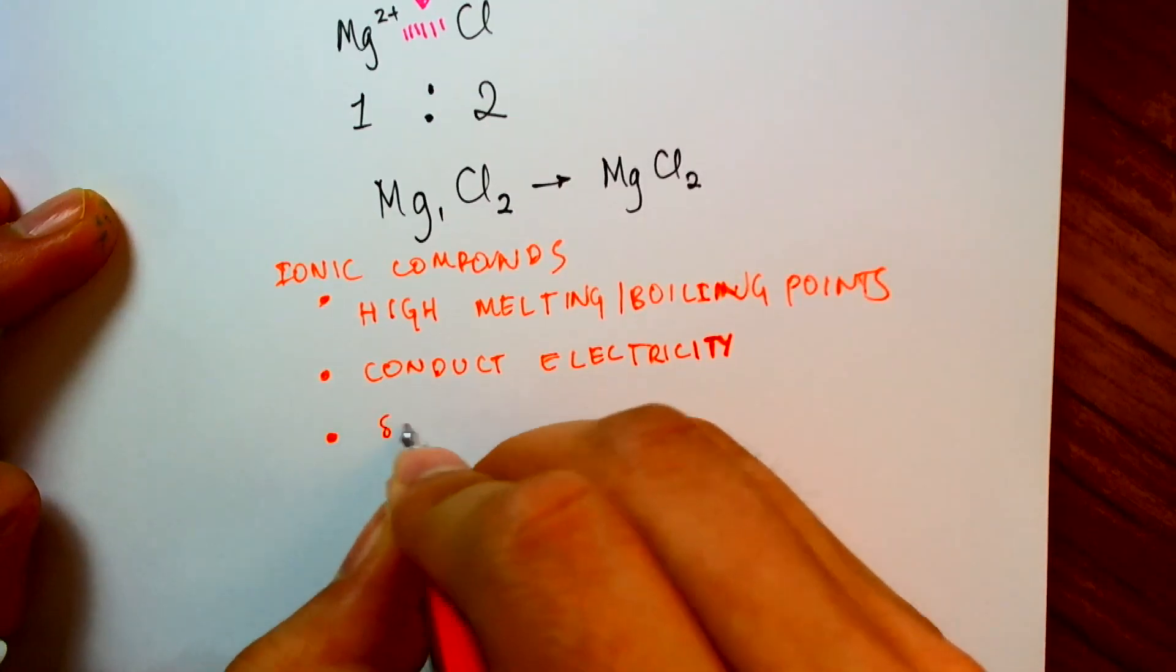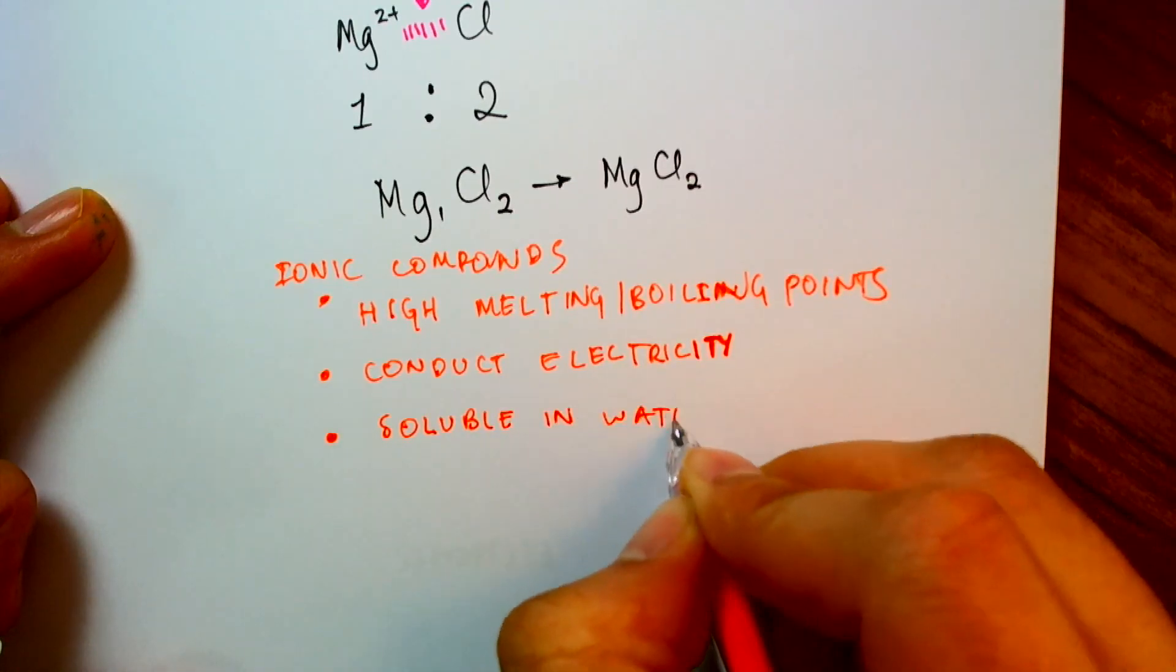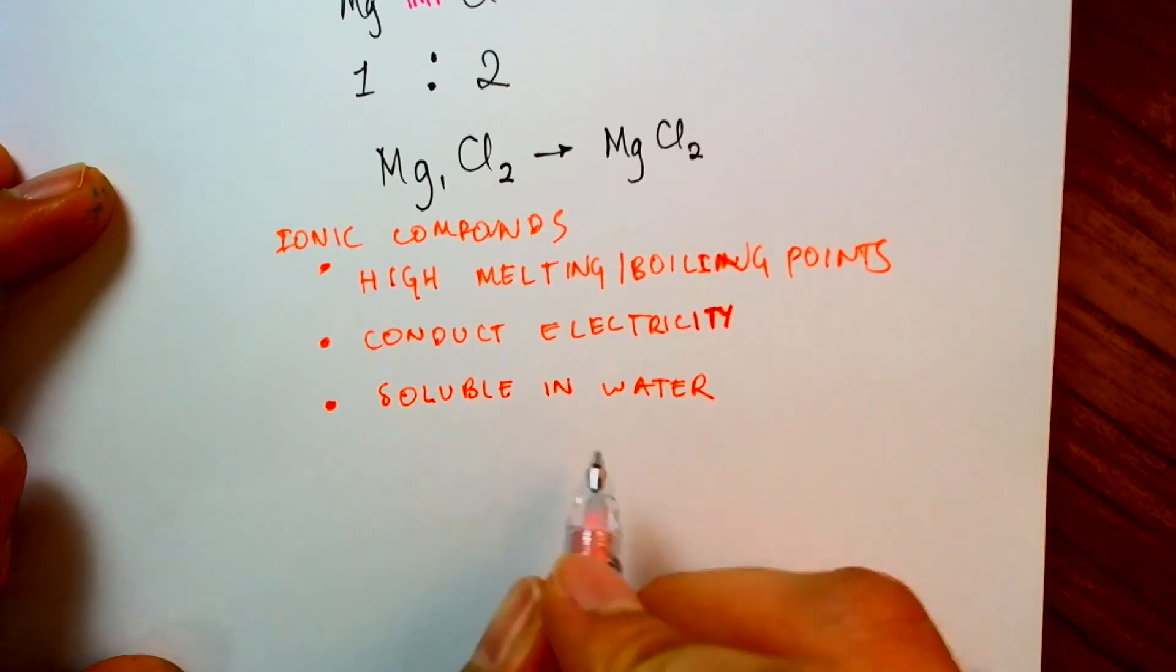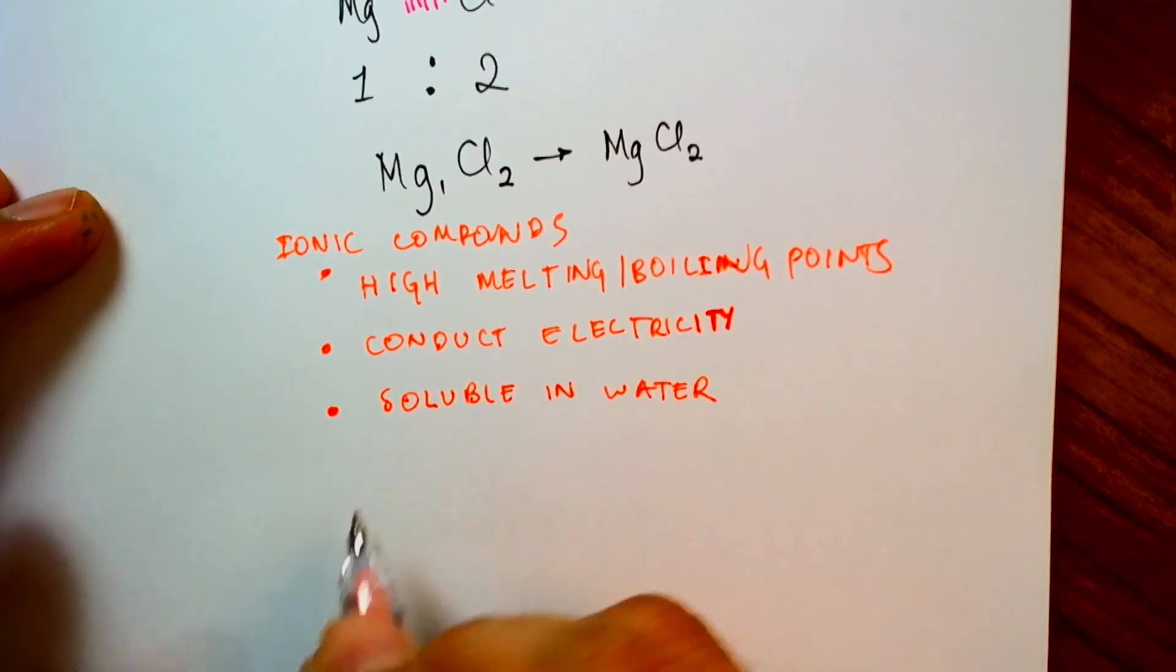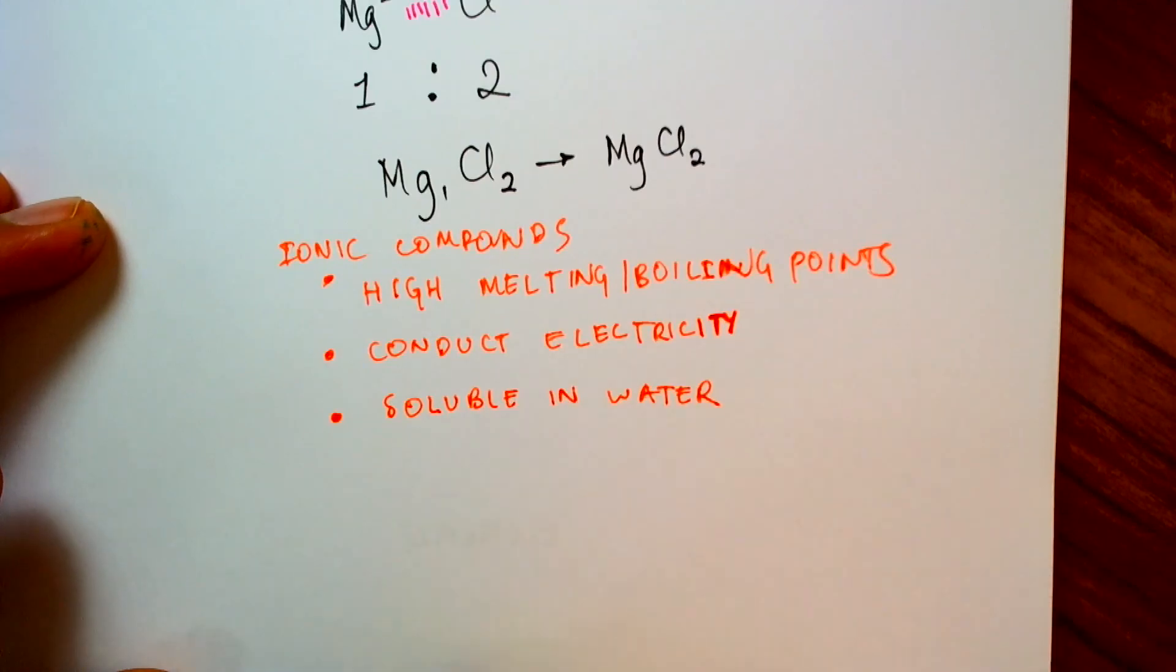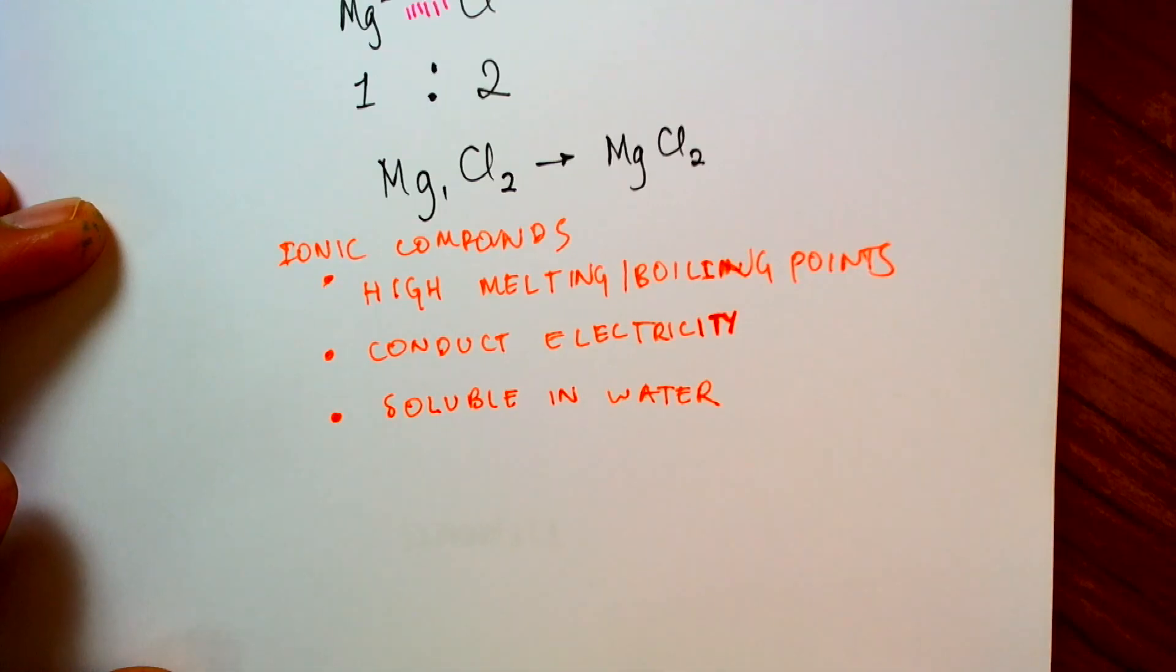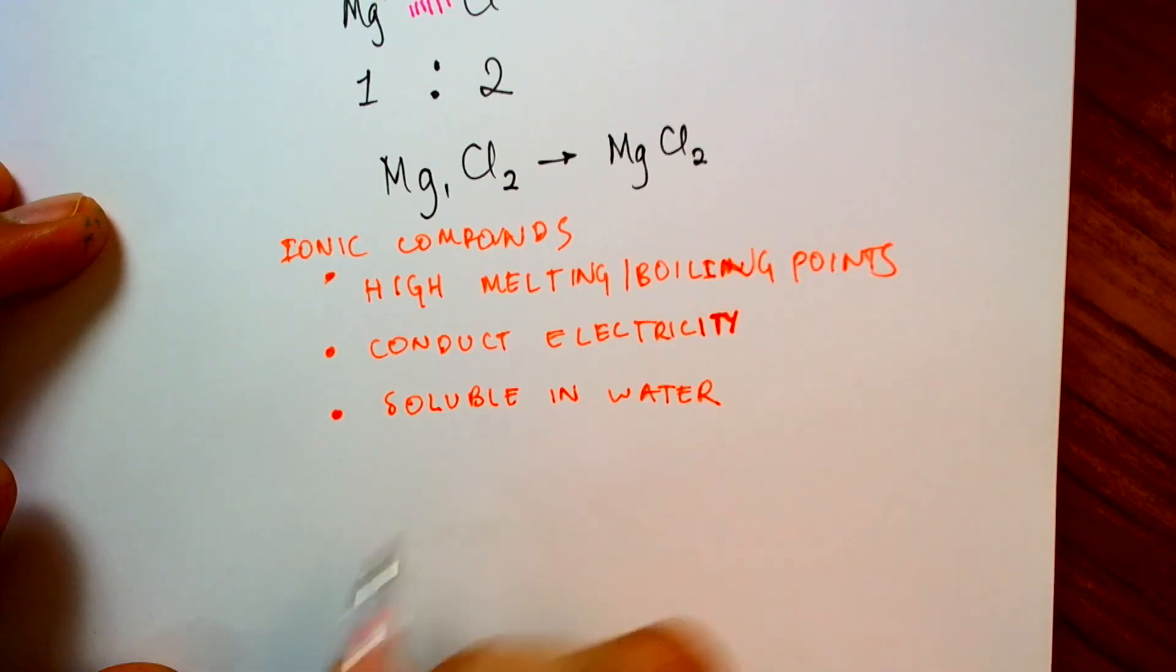And finally, the ionic compounds are soluble in water. This whole notion of whether or not something is soluble in water is actually quite a big story on its own. So for now, I won't go into this, but I just want to mention that ionic compounds tend to be soluble in water. So in the next video, we will look at how we can combine nonmetals with each other. So a bond forming between a nonmetal and a nonmetal.